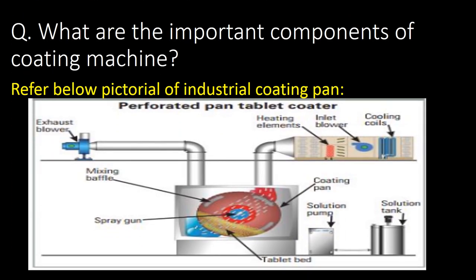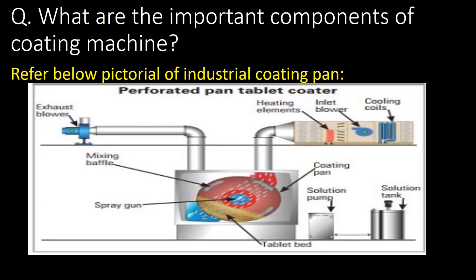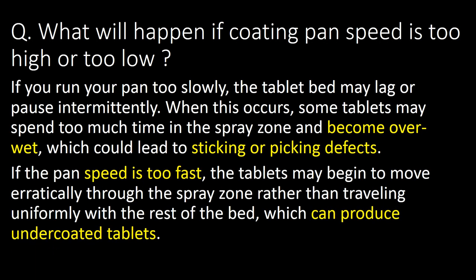What are the important components of the coating machine? Refer to the pictorial for understanding the basic components. In coating, we have mixing baffles, spray gun, tablet bed, coating pan, solution pump, and solution tank. To support coating activity, we have cooling coils, inlet blower, heating elements, and exhaust blower.